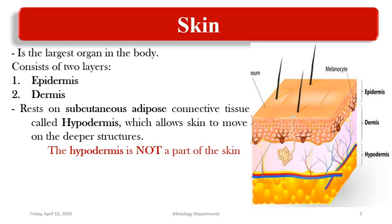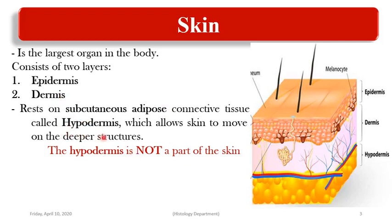The skin is the largest organ in the body, representing about 16% of total body weight. It is composed of two layers: the superficial layer is the epidermis, which is stratified squamous keratinized epithelium, and the deeper layer is the dermis. Beneath the dermis is the subcutaneous adipose connective tissue called the hypodermis.